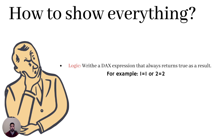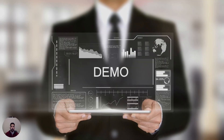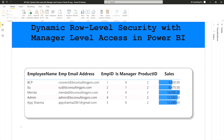Now we're moving to the demo. I'm going to show you how I achieved this and explain it code by code. Right now I'm in my Power BI file — dynamic role level security with manager level access in Power BI. I've created a table visualization showing employee name, employee email address, and employee ID. There's a column called 'is manager' where zero means the employee is not a manager and one means they are. There's also product ID and sales columns.